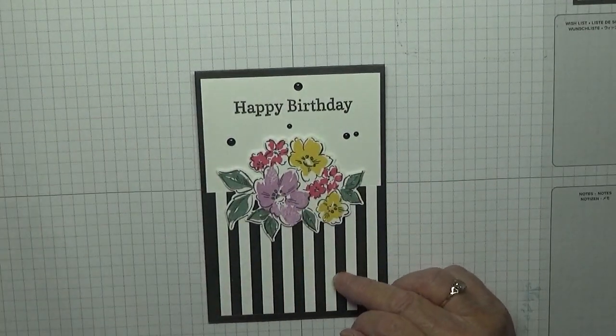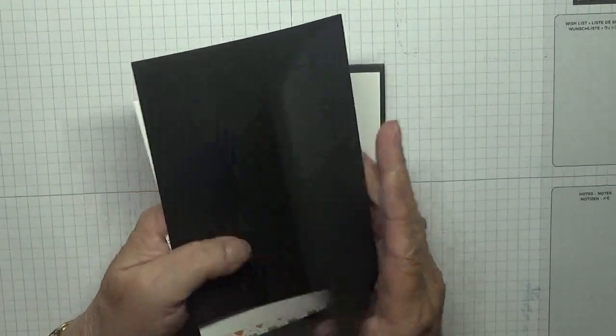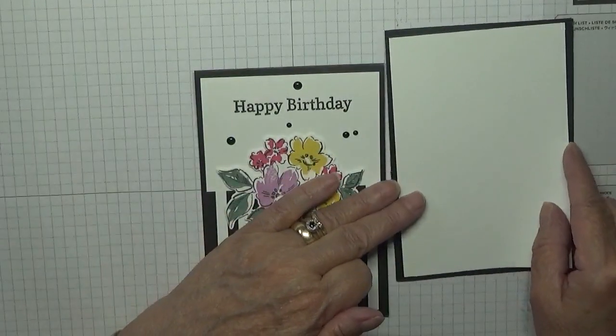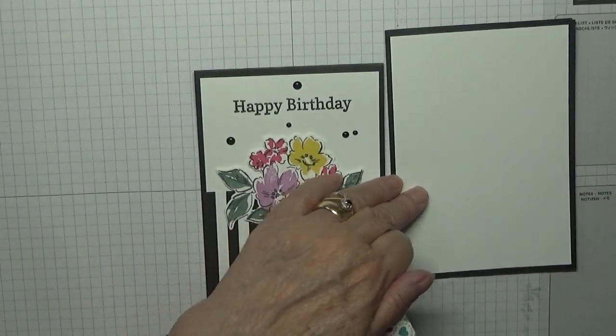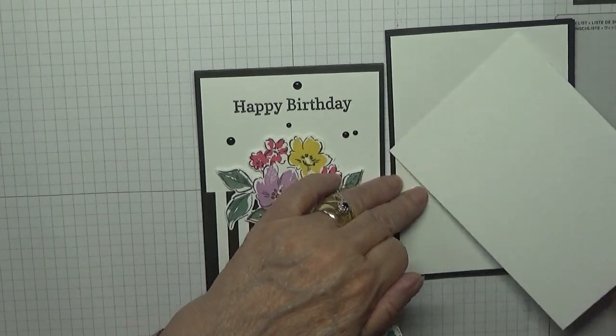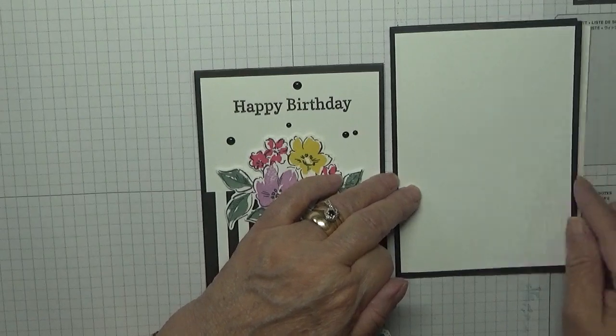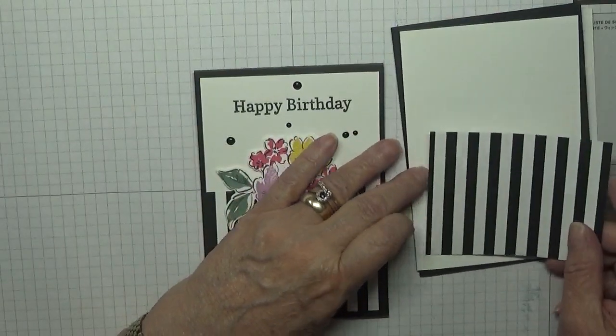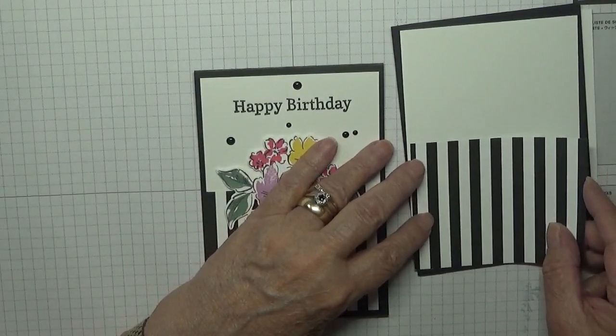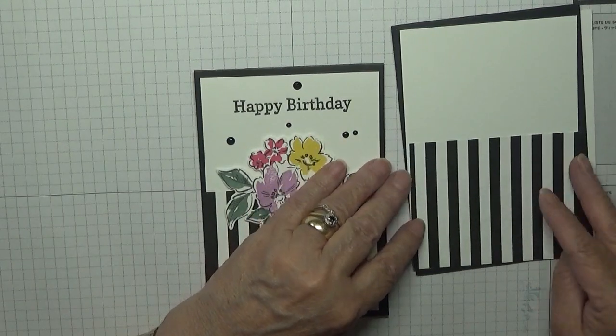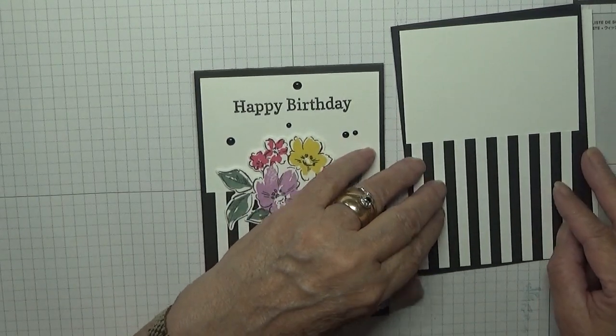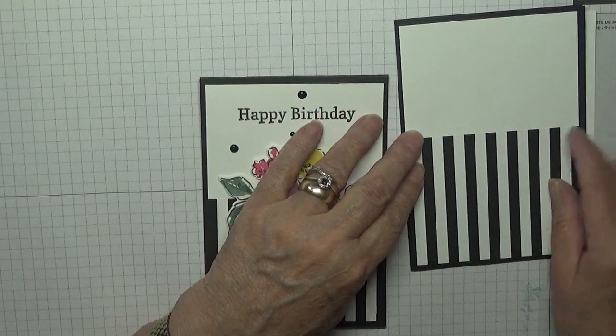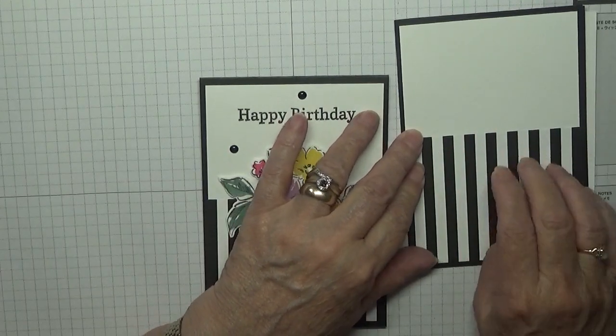The DSP I've got - I've got a card base of basic black at eight and a quarter by five and seven eighths, scored at four and one eighths. A piece of whisper white at five and five eighths by three and seven eighths, and another piece for inside. And then I've got a piece of DSP. This is the DSP that's on the back of the catalogue for a hostess. If you host a party, you'll get it near enough half price.